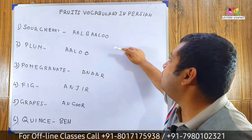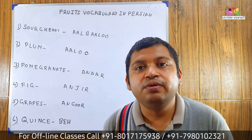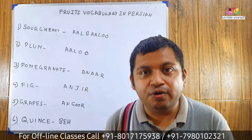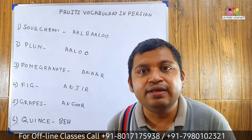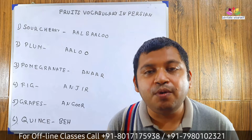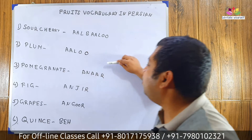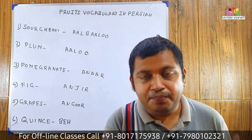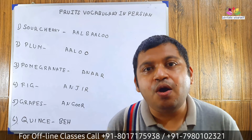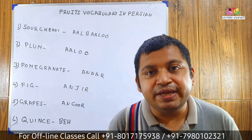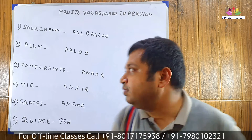Sour cherry: Albaloo. Let's pronounce it with me: Albaloo. Come to the next word. Plum: Aloo. Let's pronounce it with me: Aloo.